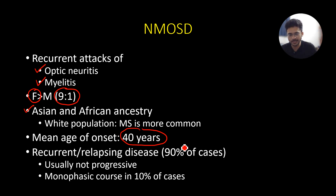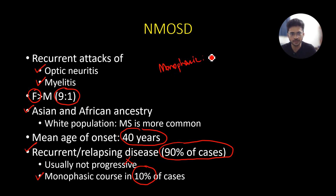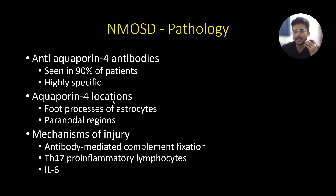The mean age of onset is around 40 years, a little more compared to multiple sclerosis. In 90% of patients it's going to be a relapsing illness, and unlike multiple sclerosis it's very rare to present as a progressive disease. In 10% of cases it can present as a monophasic illness. Remember that a monophasic illness is more likely to be seen in MOG antibody associated disease, whereas in NMOSD it's more likely to be a recurrent or relapsing course.